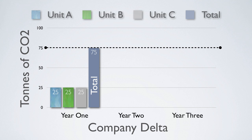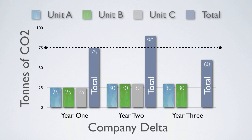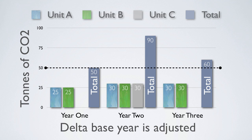In year two, the company experiences some growth, leading to an increase in emissions to 30 tons per business unit, for a total of 90 tons. Once again, there is no recalculation for growth, so base year emissions are not recalculated in this instance. At the beginning of year three, Delta divests business unit C, and its annual emissions are now 60 tons. This makes it look as if Delta decreased its emissions by 15 tons relative to the base year emissions. However, to maintain consistency over time, the company recalculates its base year emissions to take into account the divestment of business unit C.